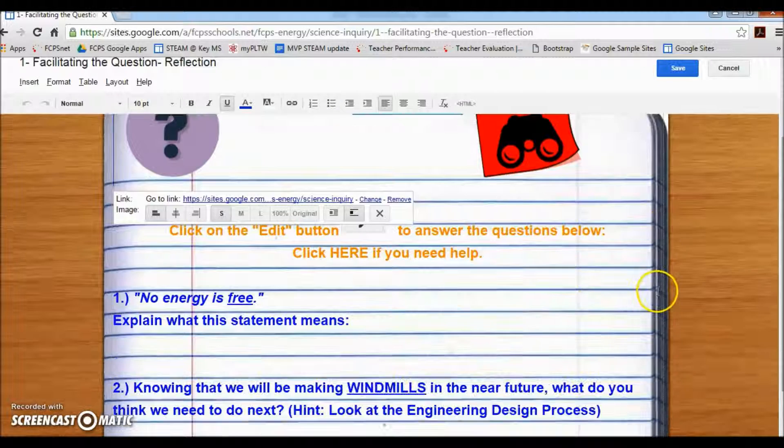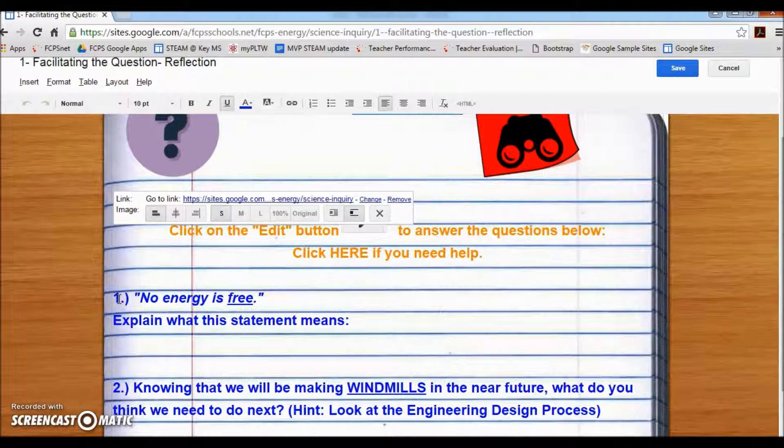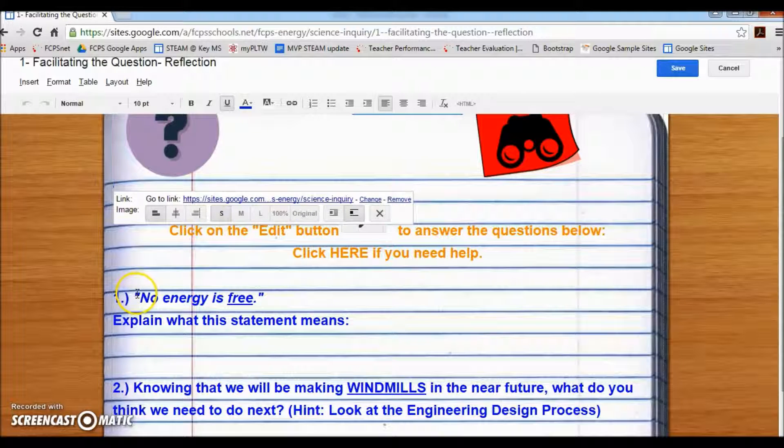Now it is in edit mode. You will see the first question. In this case, it says quotation one: 'No energy is free.' Explain what this statement means.